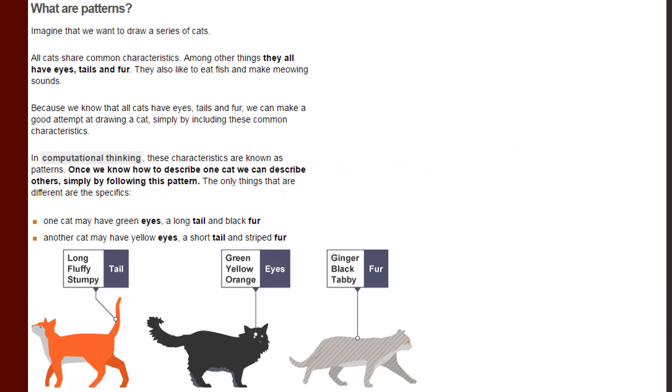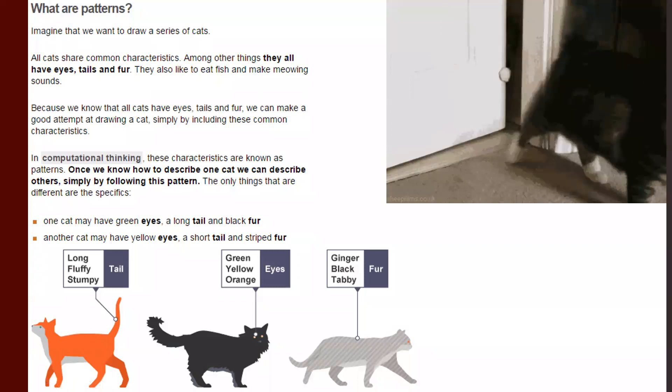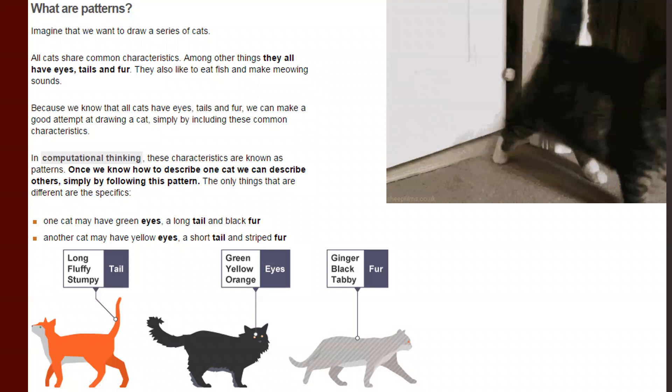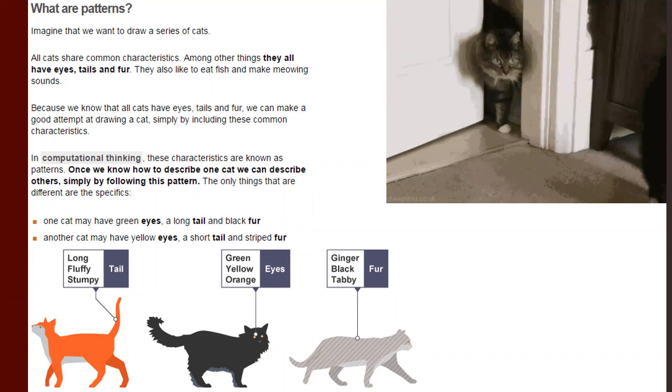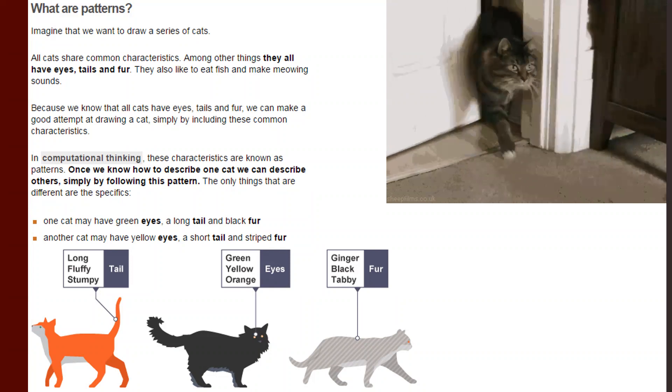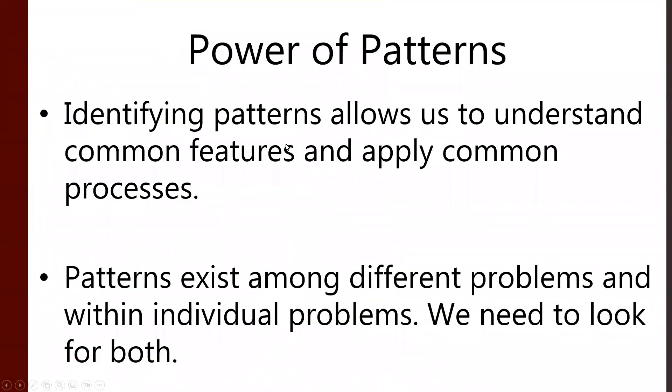As we understand patterns, we can then work on generalizing. So we're back to the BBC example here. All cats have attributes: tails, eyes, fur, nibbliness. And if you can find the pattern of what a cat looks like, what a cat is doing, then you can start to define specifics. This cat has a long fluffy tail. This cat has green eyes and bites.